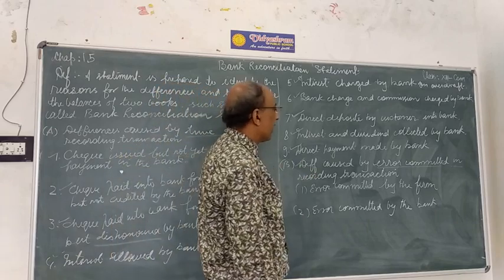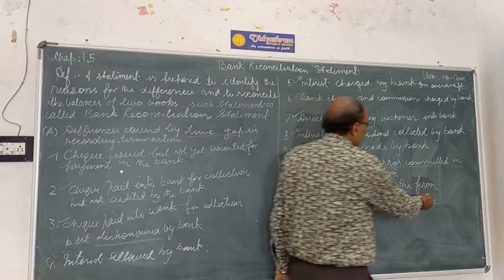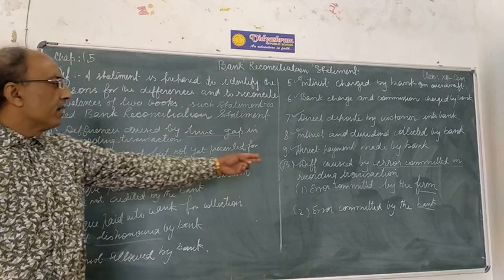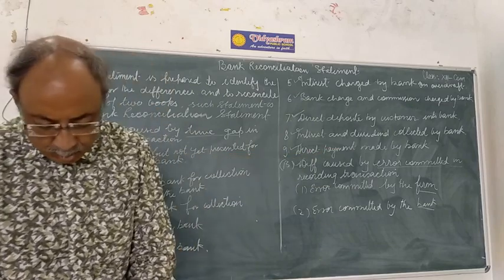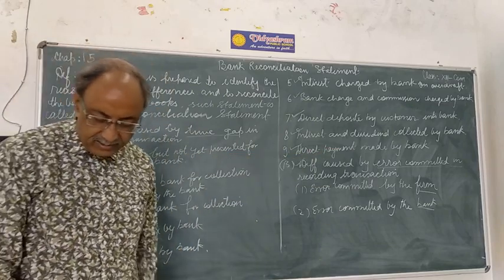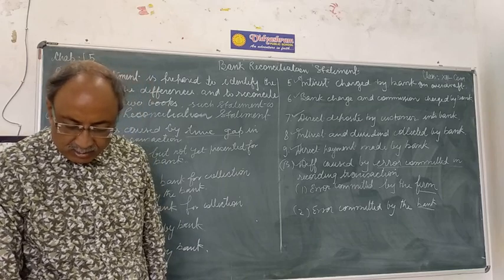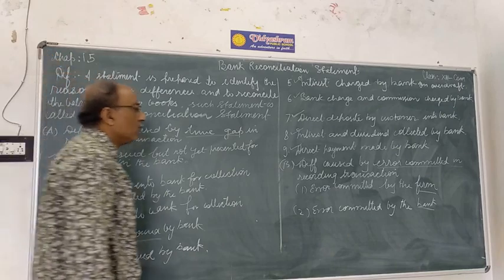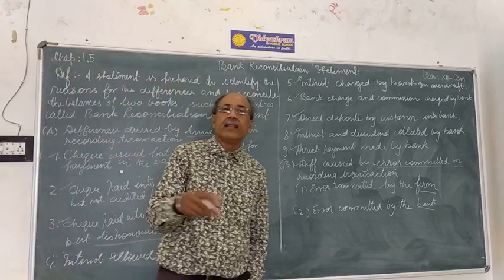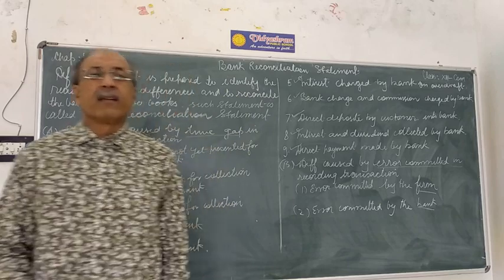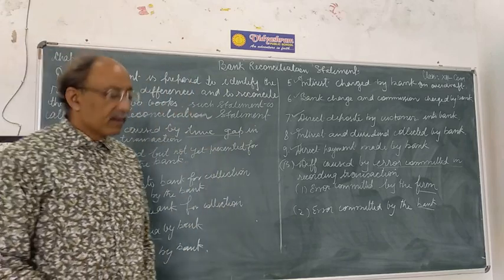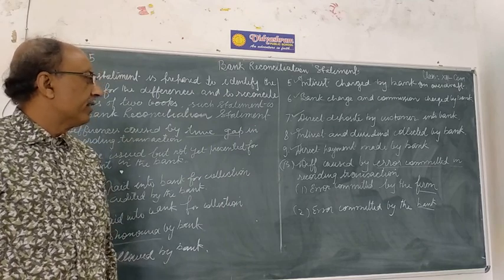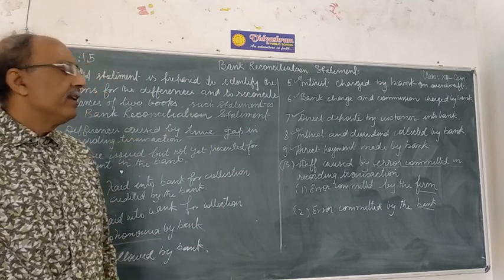Errors committed by the firm: there are some errors that the firm had committed. For example, a cheque issued to creditors was recorded with the wrong amount in the cashbook. Also, a cheque deposited into the bank was not entered in the cashbook. This is the firm's fault, not the bank's fault.